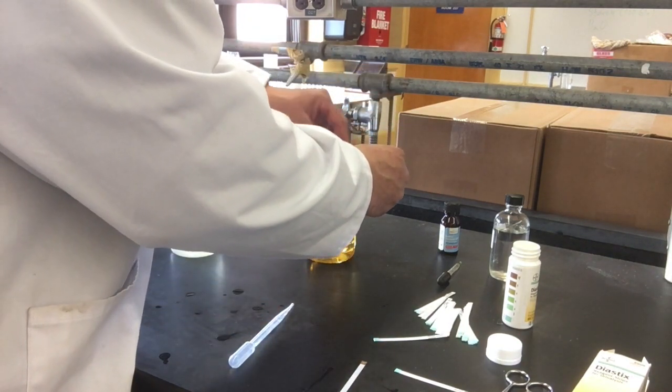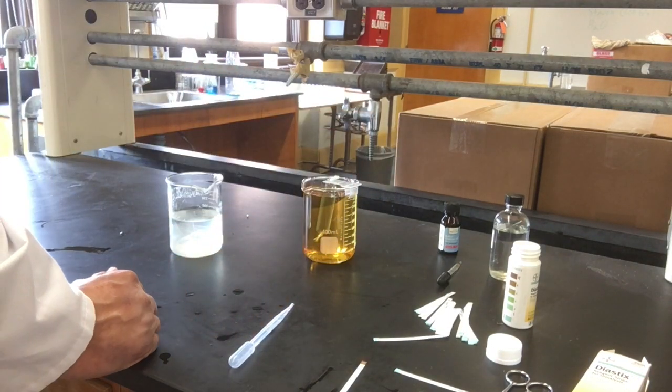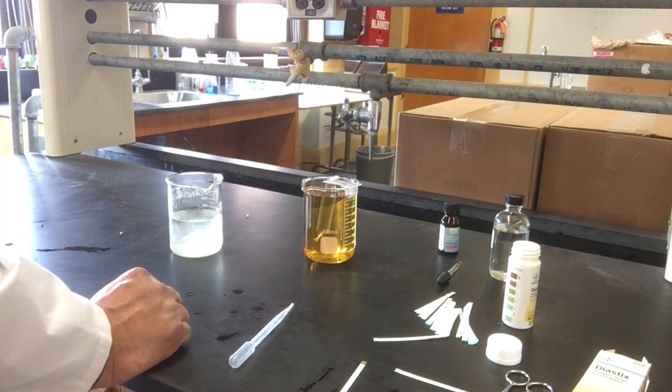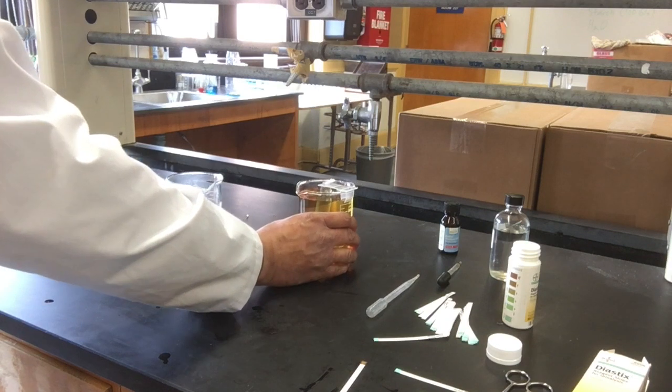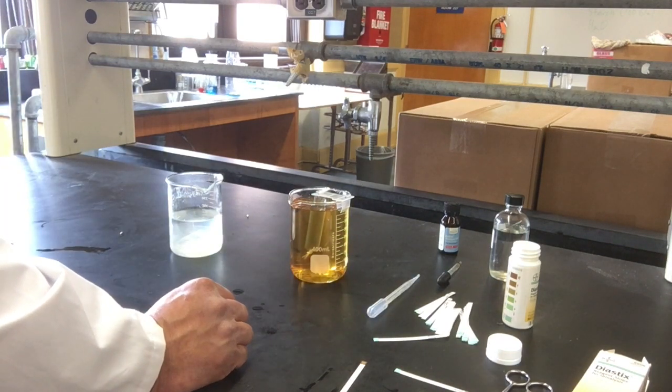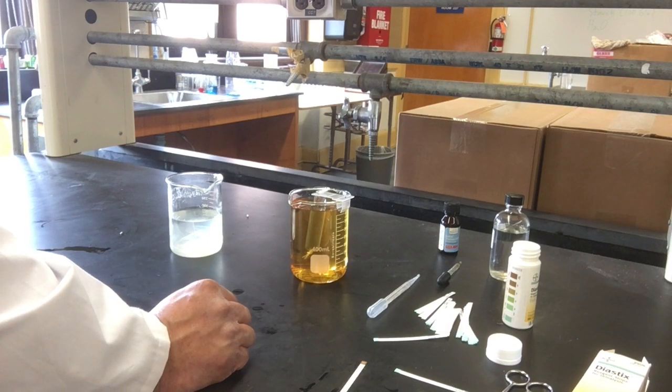Now I'll place the bag in the beaker and let it sit for about half an hour. Inside the bag is glucose and starch. Outside, in the beaker, is water and iodine solution—potassium iodine.